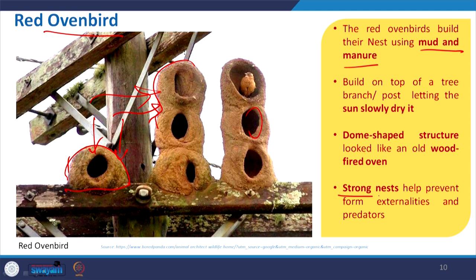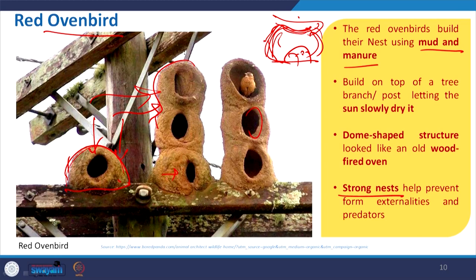Why is it called 'oven'? If you see this particular structure, in earlier days and still in rural areas, they make ovens made of mud — after burning it gets hardened and is used for cooking. This is a similar kind of structure. The mud used has some laterite-like quality, giving a reddish colour along with other ingredients that give strength to this nest.